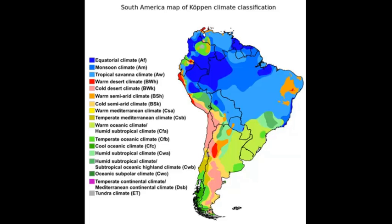Starting in with the north, right through here, we have the equator coming right through here. That makes sense — we're going to find our A climates. A, we think of as tropical, so warm and moist.